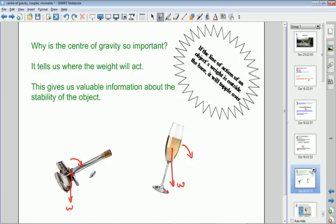So effectively, the lower the center of gravity is, the more stable the object is, because it has to go to a larger angle before the center of gravity goes outside the base.